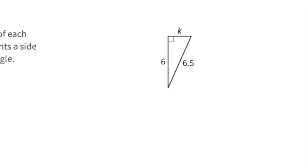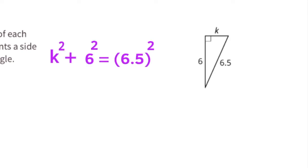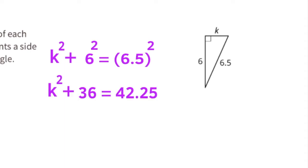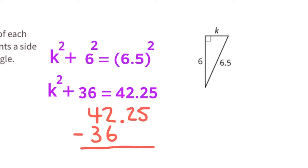Let's find another missing side length. Again we'll use the Pythagorean theorem: a² + b² = c². In this case we use k and 6, so k² + 6² = 6.5². Since 6² is 36 and 6.5² is 42.25, the equation reads k² + 36 = 42.25.